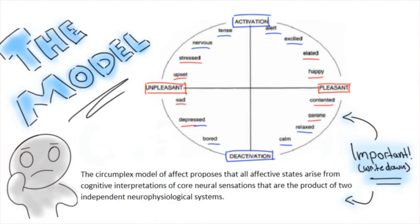So, affective circumplex, as per the scientific community, is as follows. The circumplex model of affect proposes that all affective states arise from cognitive interpretations of core neural sensations that are the product of two independent neurophysiological systems.